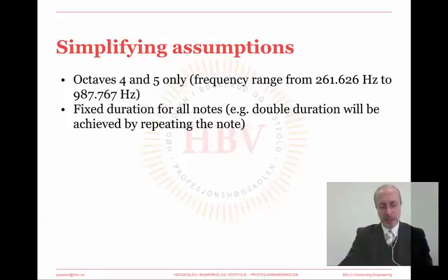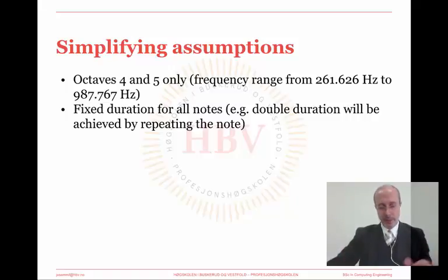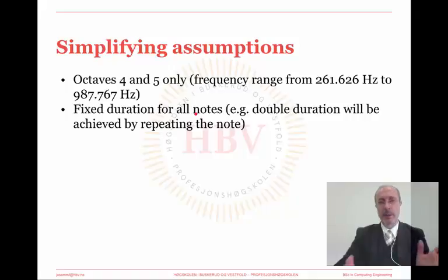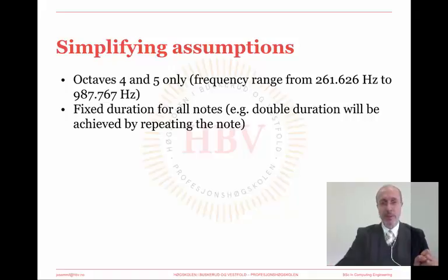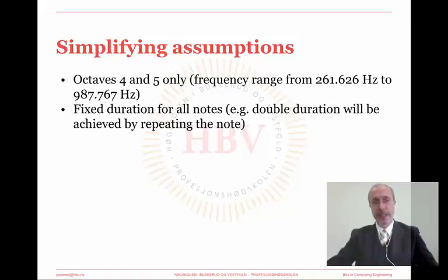We can simplify our work in two ways. The first is to consider only octaves 4 and 5 in order to shorten the frequency range of our implementation. The second is to assume that all musical notes will have the same duration. You might of course try to overcome these restrictions in your implementation, particularly if you are aiming for an A grade.